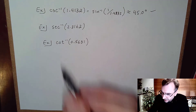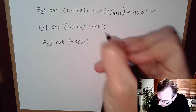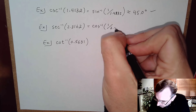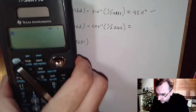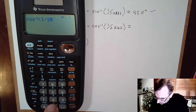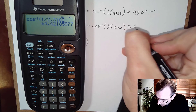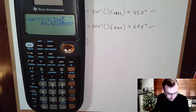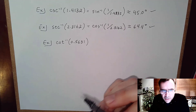Next: secant is 1 over cosine, so for secant inverse we use cosine inverse. Cosine inverse of 1 over 2.3162 entered on the calculator gives approximately 64.4 degrees.